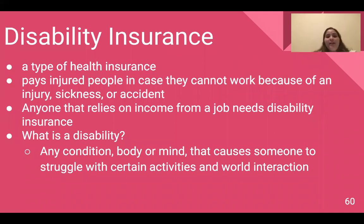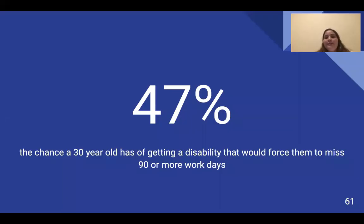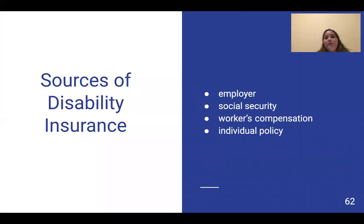Disability insurance is a type of health insurance that pays injured people in case they can't work because of an injury, sickness, or accident. Anyone who relies on income from a job needs disability insurance. A disability is any condition — body or mind — that causes someone to struggle with certain activities and even with everyday interaction. A 30-year-old has a 47% chance of getting a disability that would force them to miss 90 or more days of work, resulting in the need for disability insurance. Sources of disability insurance include employer plans, social security, workers' compensation, or an individual policy.